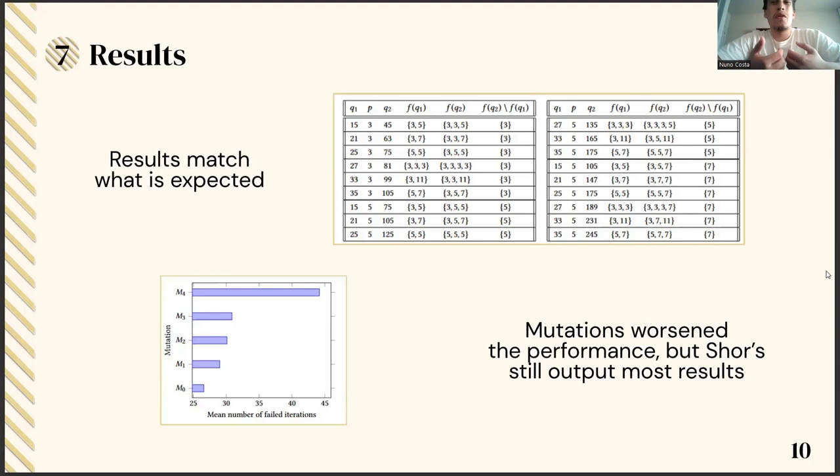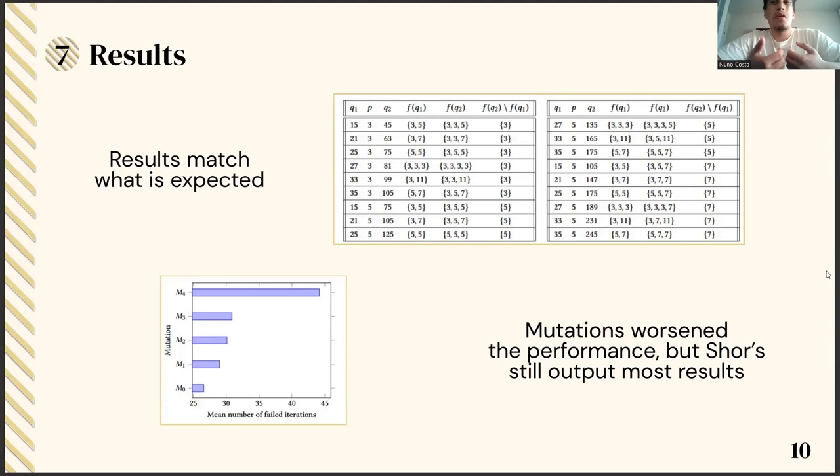As such, the results are not based on past failed tests, but on the number of times the algorithm needed to execute to output a correct solution. Another measurement we had was the runtime of the algorithm. We noticed that this runtime was inconsistent and unreliable for n greater than 35, which made our test development harder. This can be largely attributed to the poor choice of the a parameter in Shor's algorithm, or the simple fact that we are running it on a simulator.